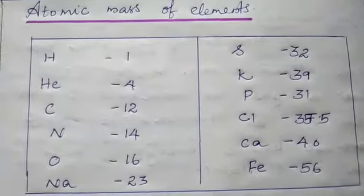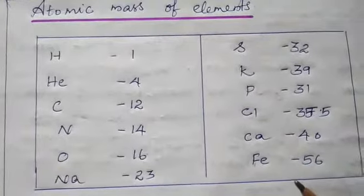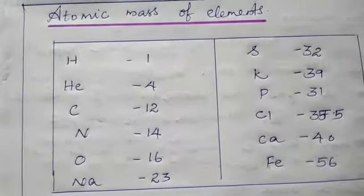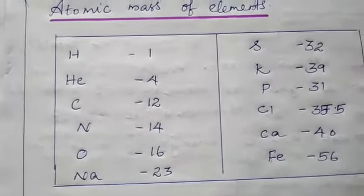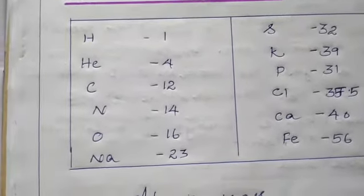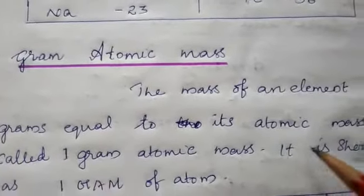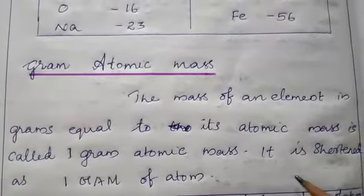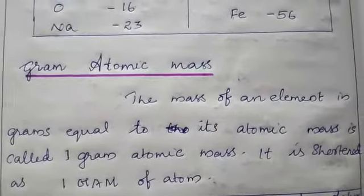This is needed for the problems and calculations. If you know these, you can calculate and do the problems. You have to learn the atomic masses of these elements. The mass of an element in grams equal to its atomic mass is called 1 gram atomic mass, and it is shortened as 1 GAM.